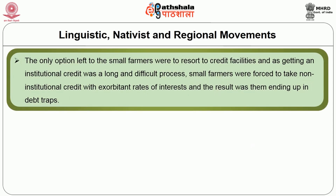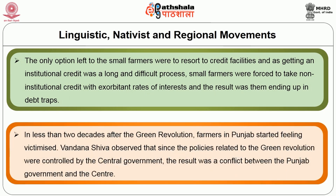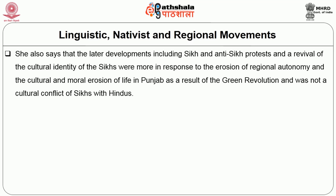The only option left to the small farmers was to resort to credit facilities, but obtaining institutional credit was a long and difficult process. Small farmers were forced to take up non-institutional credit with exorbitant rates of interest, resulting in them ending up in a debt trap. In less than two decades after the Green Revolution, farmers in Punjab started feeling victimized. Vandana Shiva observed that since the policies related to the Green Revolution were controlled by the central government, the result was a conflict between the Punjab government and the center. She also says that the later developments, including Sikh and anti-Sikh protests and a revival of Sikh cultural identity, were more in response to the erosion of regional autonomy and the cultural and moral erosion of life in Punjab as a result of the Green Revolution, and was not a cultural conflict of Sikhs with Hindus.